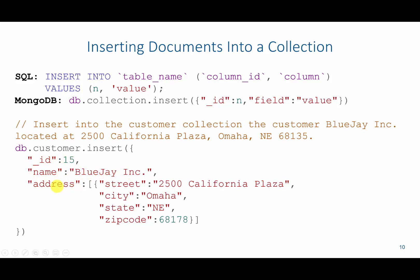For the address field, since it has multiple components, we're going to start another array. So we're going to have a square bracket and then a curly bracket. Inside of this we'll have street with the street address, city with the city, state with the state, and then zip code with the zip code.